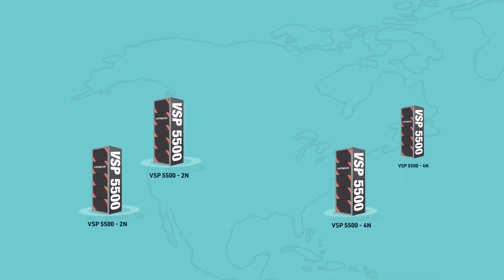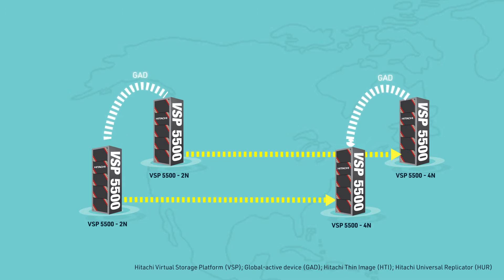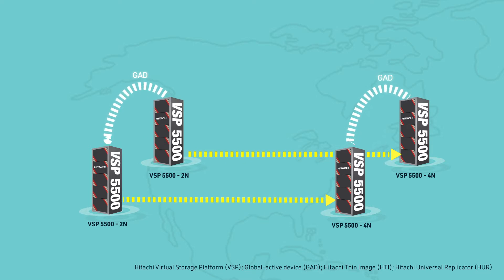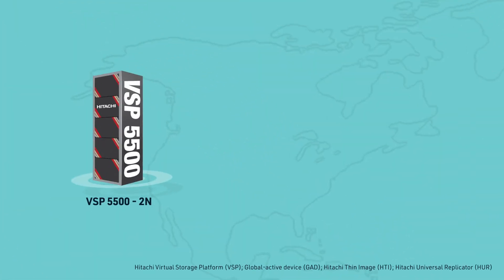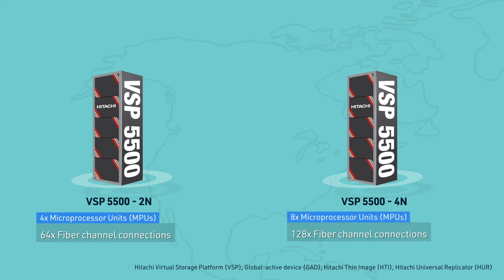Our first case is a scale-out of two VSP5500 two-node models with an active GAD configuration, which were upgraded to VSP5500 four-node models. The VSP5500 two-node model provides four microprocessor units or MPUs and can connect up to 64 fiber channel ports. The four-node model provides eight MPUs and can connect up to 128 fiber channel ports.